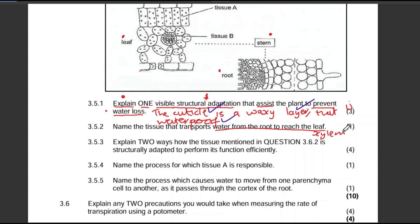Now we need to explain for four marks. Explain two ways how the tissue mentioned in 3.5.2, which is the xylem, is structurally adapted to perform its function efficiently. They are asking you to explain two ways in which the xylem is structurally adapted in order for it to transport water and minerals from the soil through the roots, stem and leaf. I hope you understand that question. You need to mention the structure and the significance of that structure or the function of that structure.